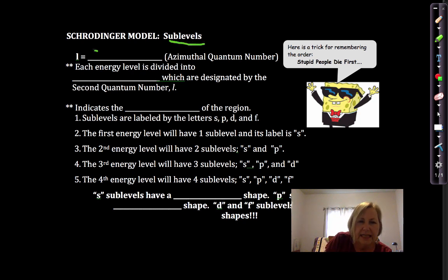So L is a sublevel. It's also called the azimuthal quantum number because it gives us the shape of the region in space with its 90% chance of finding an electron with a given energy.